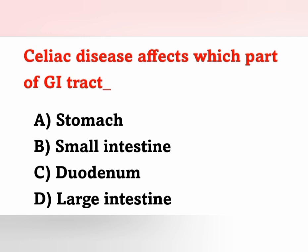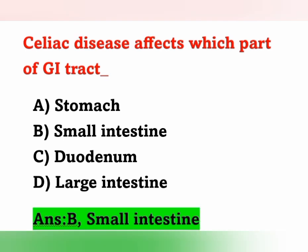Next question: Celiac disease affects which part of the GI tract? Options: A) Stomach, B) Small intestine, C) Duodenum, D) Large intestine. Celiac disease commonly affects the small intestine. Option B is the correct answer.